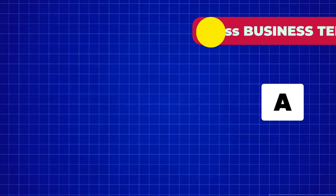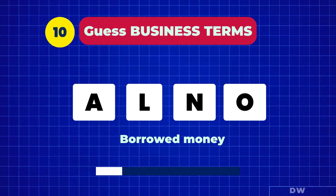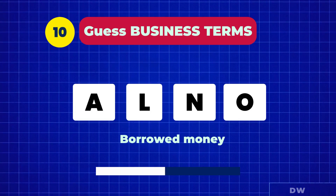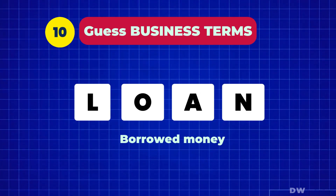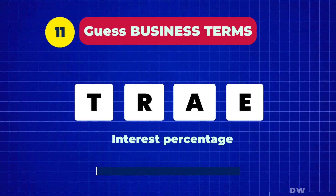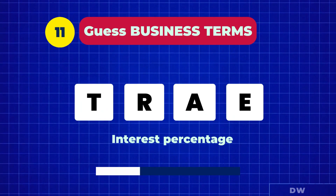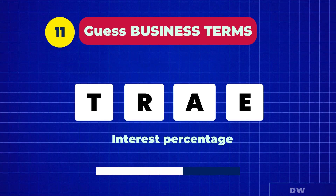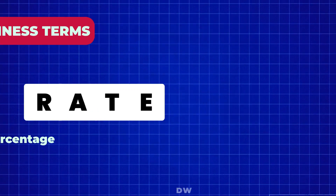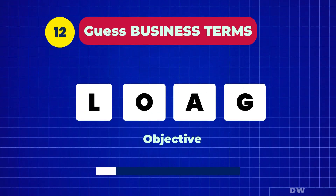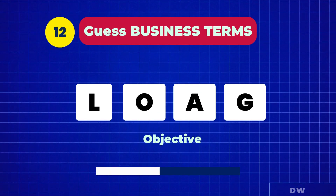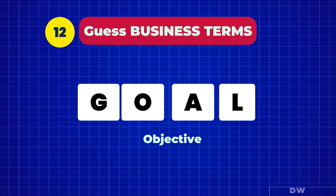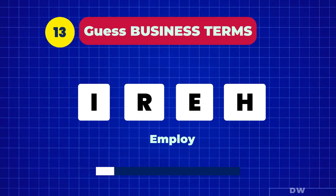Positive outcome — gain. Borrowed money — loan. Interest percentage rate. Objective — goal.